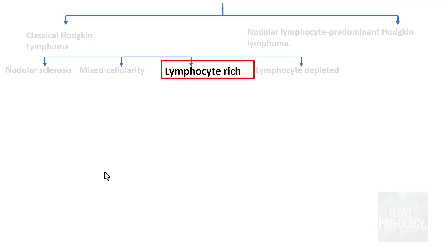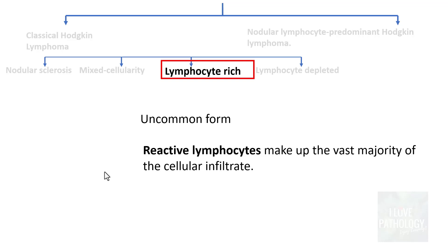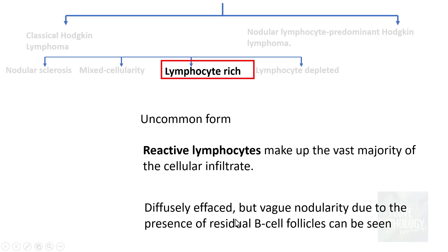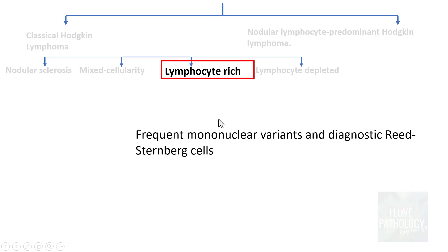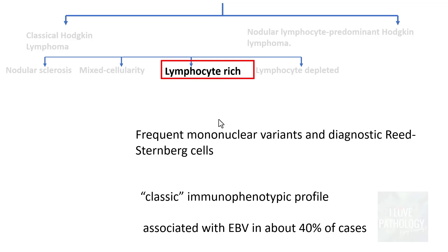The third classical Hodgkin lymphoma subtype is lymphocyte-rich, which is an uncommon form. The characteristic histological feature is that reactive lymphocytes make up the majority of the cellular infiltrate. The lymph nodes are diffusely effaced, but sometimes can be vaguely nodular due to residual B-cell follicles. Mononuclear variants and classical Reed-Sternberg cells can be seen. It shares the classic immunophenotypic profile — PAX-5, CD15, and CD30 positive — and is associated with Epstein-Barr virus in around 40% of cases. This variant has a very good to excellent prognosis.